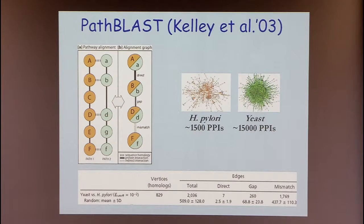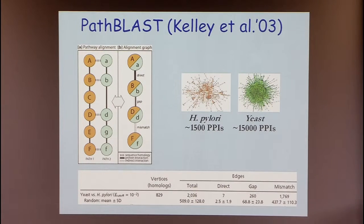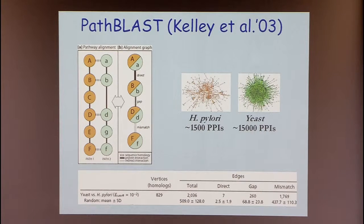The first work on local network alignment I'm aware of involved the lab of Trey Heidecker, called PathBlast. The idea was to identify in a network alignment graph paths of length 4, and group these paths into conserved subnetworks. An edge could mean both interactions were direct, one was direct and the other was a gap — like gaps in sequence alignment — or both were indirect, called a mismatch.